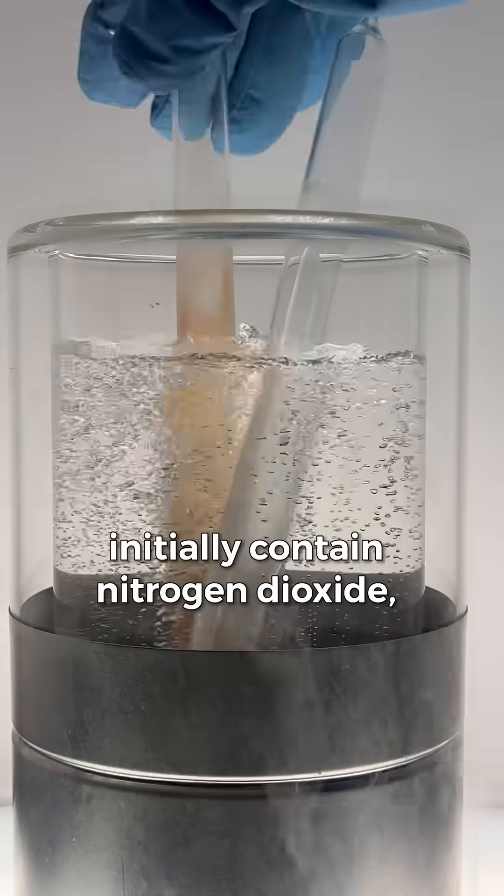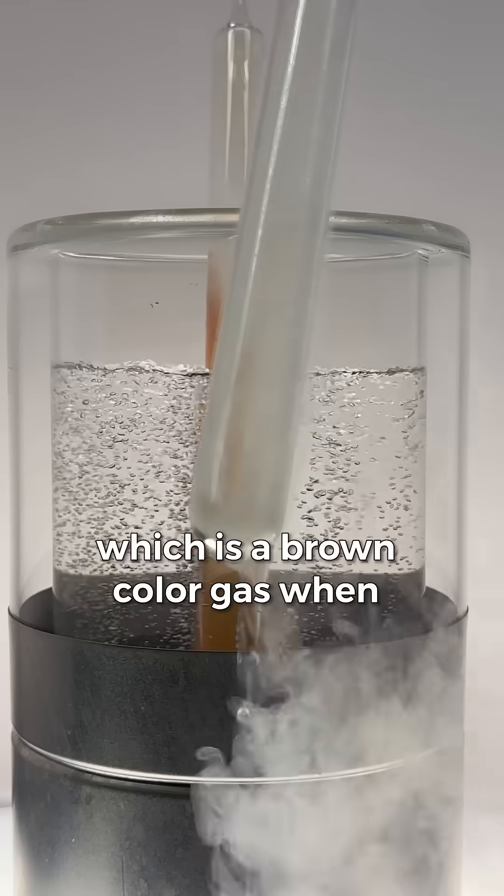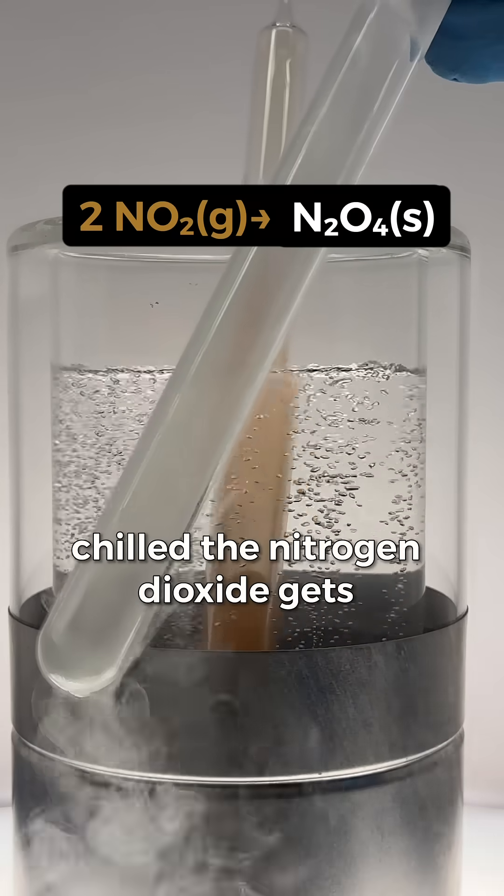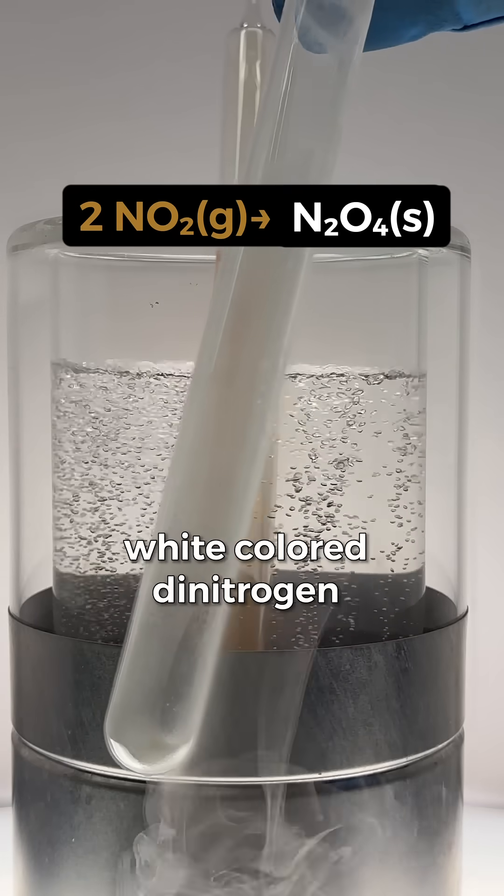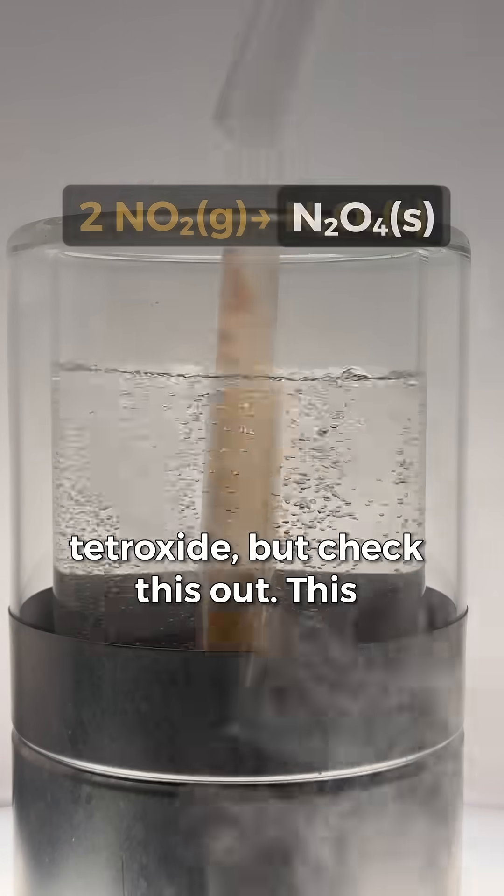This second tube initially contained nitrogen dioxide, which is a brown colored gas. When chilled, the nitrogen dioxide gets chemically transformed into white colored dinitrogen tetroxide.